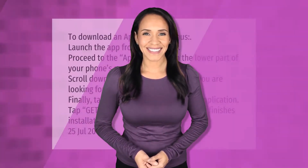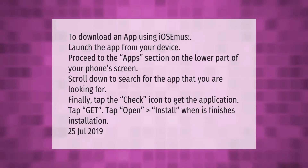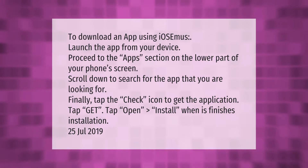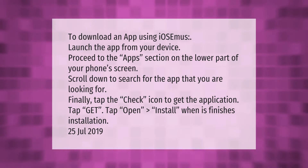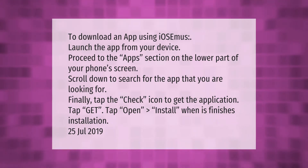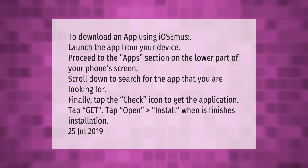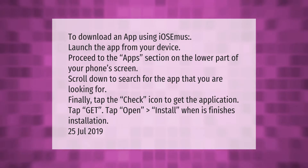To download an app using iOS Emus, launch the app from your device and proceed to the Apps section on the lower part of your phone screen. Scroll down to search for the app that you are looking for, then tap the check icon to get the application.